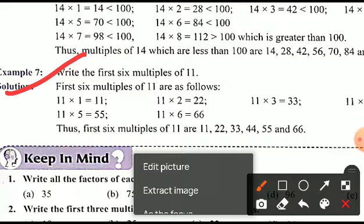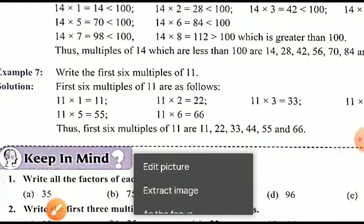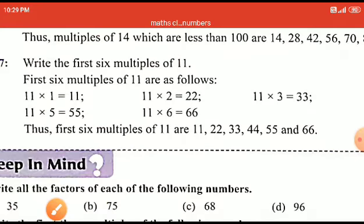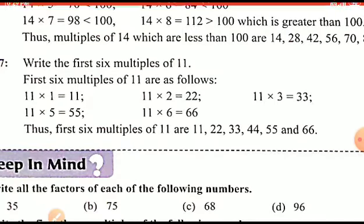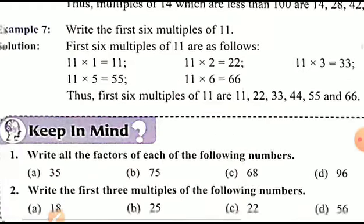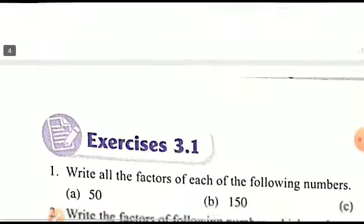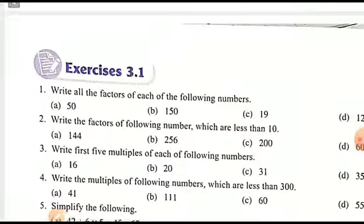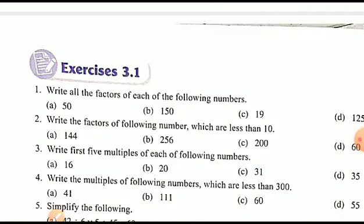Example: write the first 6 multiples of 11. They are: 11 × 1 = 11, 11 × 2 = 22, 11 × 3 = 33, 11 × 4 = 44, 11 × 5 = 55, 11 × 6 = 66. So the first 6 multiples of 11 are 11, 22, 33, 44, 55, and 66.